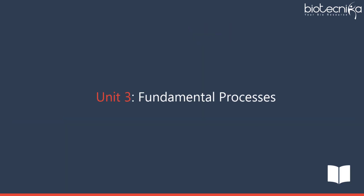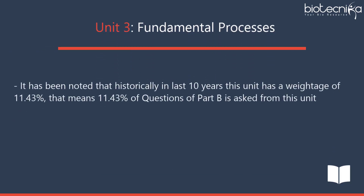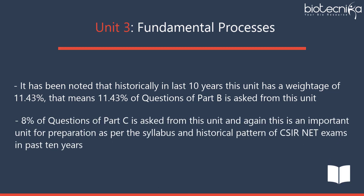Unit 3 – Fundamental Processes has historically had a weightage of 11.43% in Part B over the last 10 years. 8% of questions in Part C are asked from this unit. This is an important unit for preparation as per the syllabus and historical pattern of CSIRNET exam over the past 10 years.